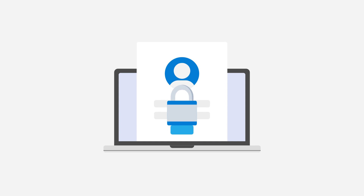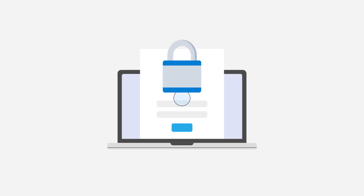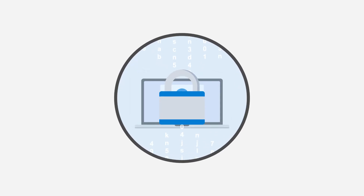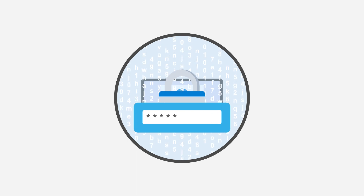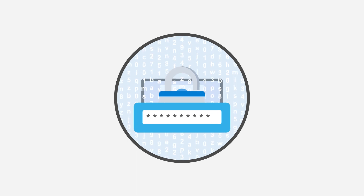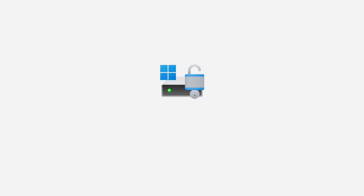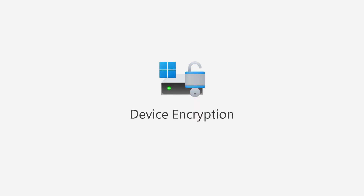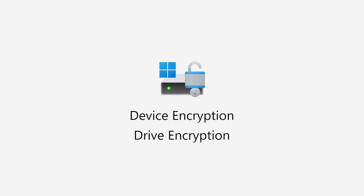BitLocker is a Windows feature that helps protect your data from unauthorized access. It uses encryption and requires one or more authentication factors to unlock your computer. There are two types of BitLocker: device encryption and drive encryption.